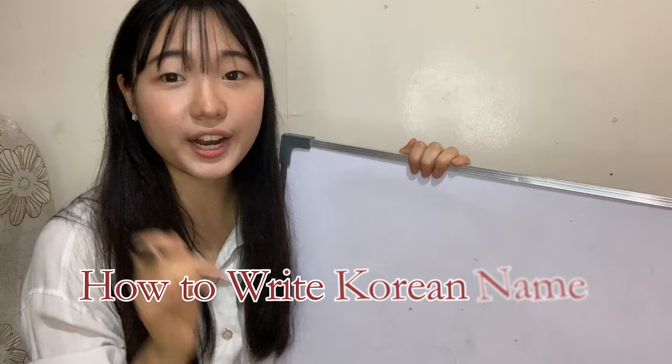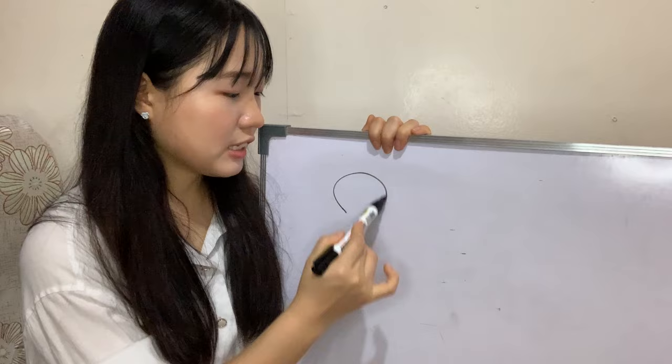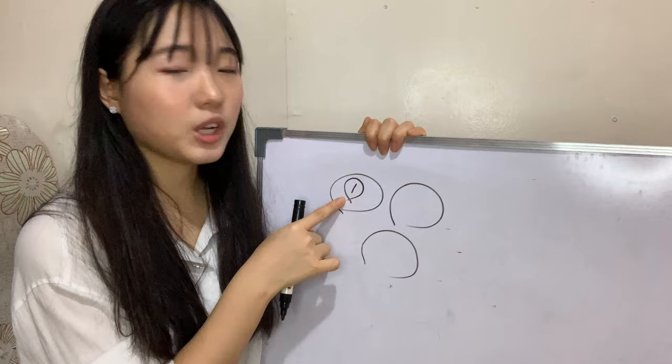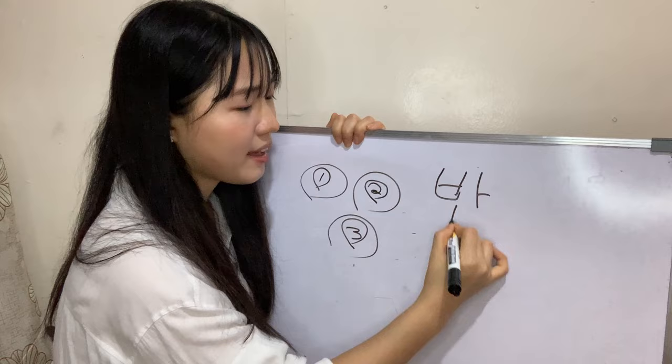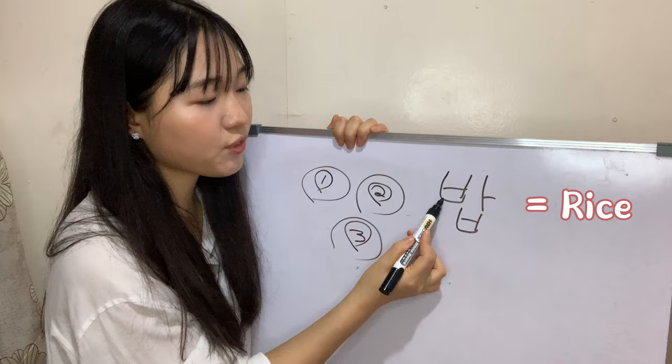When we write Korean, there should be a rule. As you can see, there are three kinds of blanks here. First, this should be a consonant. Second, it must be a vowel. And third, it must be a consonant. For example, this is what we call PAP in Korean, which means rice. So as you can see, this is the consonant, vowel, and consonant. This is how we write Korean formation.